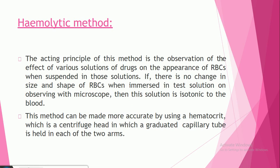When there is no change occurring in the size and shape of RBC when they are dipped in the test solution, observable with a microscope, the solution is isotonic. This method can be made more accurate by using a hematocrit, which is called PCV — packed cell volume.